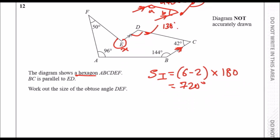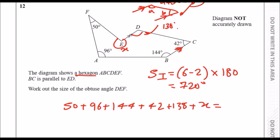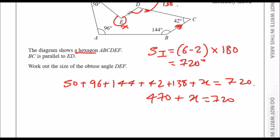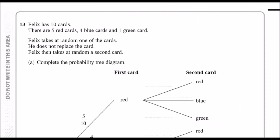Let's go ahead and sum these up. You can verify in your calculator: 50 plus 96 plus 144 plus 42 plus 138 plus x equals 720. Collecting like terms gives us 470 plus x equals 720. Then 720 minus 470 gives us 250, so x equals 250 degrees.